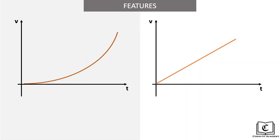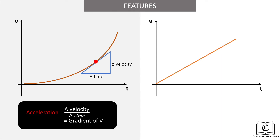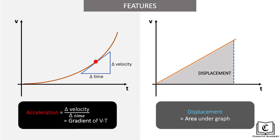Let's first cover the various features of the velocity-time graph. First, the gradient. We know that acceleration is given by the change in velocity over the change in time. So in other words, acceleration is the gradient of the velocity-time graph. Next up, displacement — the area under the velocity-time graph is displacement.